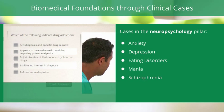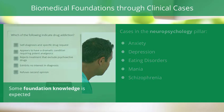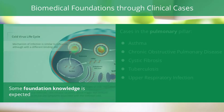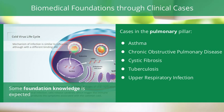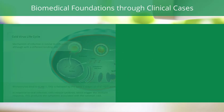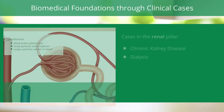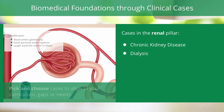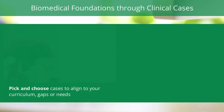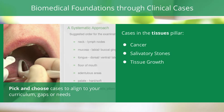Students are expected to have foundation knowledge in all areas presented, including biochemistry, cell biology, anatomy, and histology. These modules are supplements, not substitutes to foundation knowledge. Schools can pick and choose which cases they'd like to use and in which order, in line with their curriculum and needs.